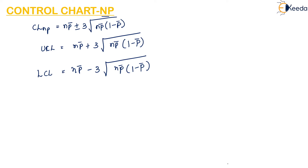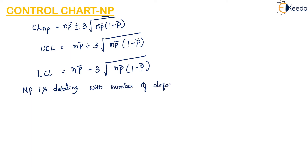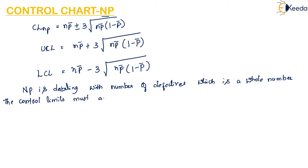Since the number of defectives is a whole number, the control limit values must be whole numbers. However, the process average can be a fraction.